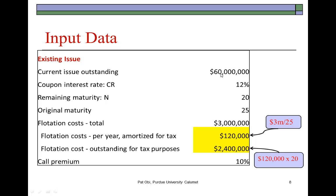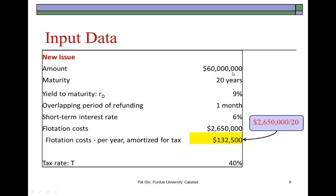For the new issue, we will borrow $60 million for 20 years at 9%, one month before retiring the existing issue. During that month, the money sits in marketable securities earning 6% annualized. Flotation costs on the new issue are $2.65 million, which will be amortized over 20 years for tax purposes, giving an annual write-off of $132,500. The tax rate for this analysis is 40%.